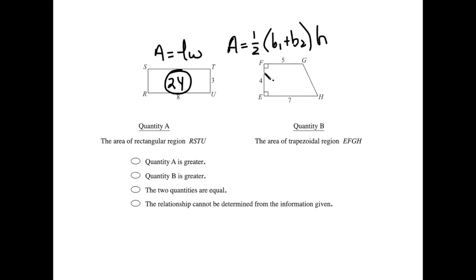Okay, so we could use that, but on the GRE, whenever you get a weird shape like a trapezoid, you can always just break it up into a rectangle and a triangle, or multiple rectangles and multiple triangles. So all we got to do is find the area of each of these pieces and then add them together.